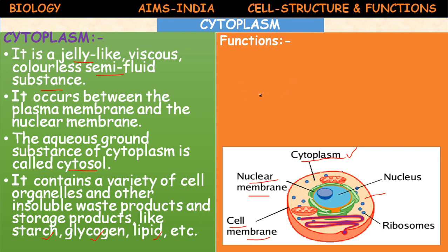There is a difference between protoplasm and cytoplasm. The living portion or fluid present inside the cell is called protoplasm, which means 'life fluid.' The cytoplasm contains the living part, called protoplasm. When it became clear that the fluid is basically a medium in which various particles and membranes float around, the functions of the cell activity take place in this cytoplasm. Several metabolic activities take place in the cytoplasm of the cell.